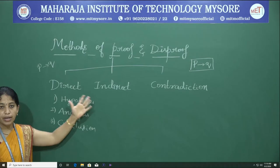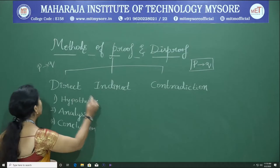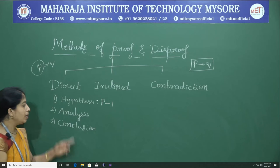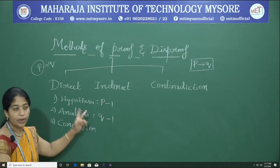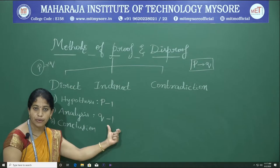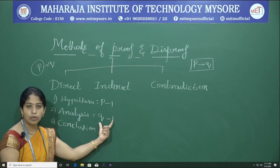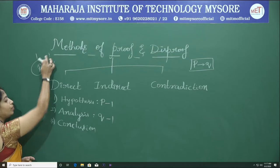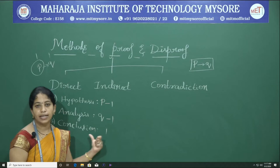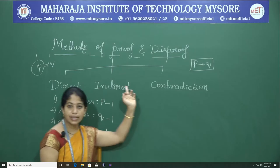Now let us look at the first method: direct proof. In direct proof, the first step is hypothesis — we assume that P is true. In the analysis step, we try to prove that Q is also true using rules of inference or laws of logic theory. Once we have proved both P is true and Q is true, since true conditional true is true, the conclusion is that the given conditional statement will be true.